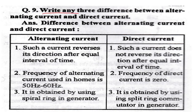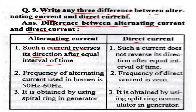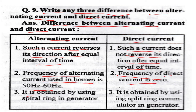Question No. 9. Write any 3 differences between alternating current and direct current. Alternating current reverses its direction after equal intervals of time; direct current does not. Frequency of AC used in homes is 50 Hz to 60 Hz; frequency of DC is 0. AC is obtained using slip rings in a generator; DC uses a split-ring commutator.